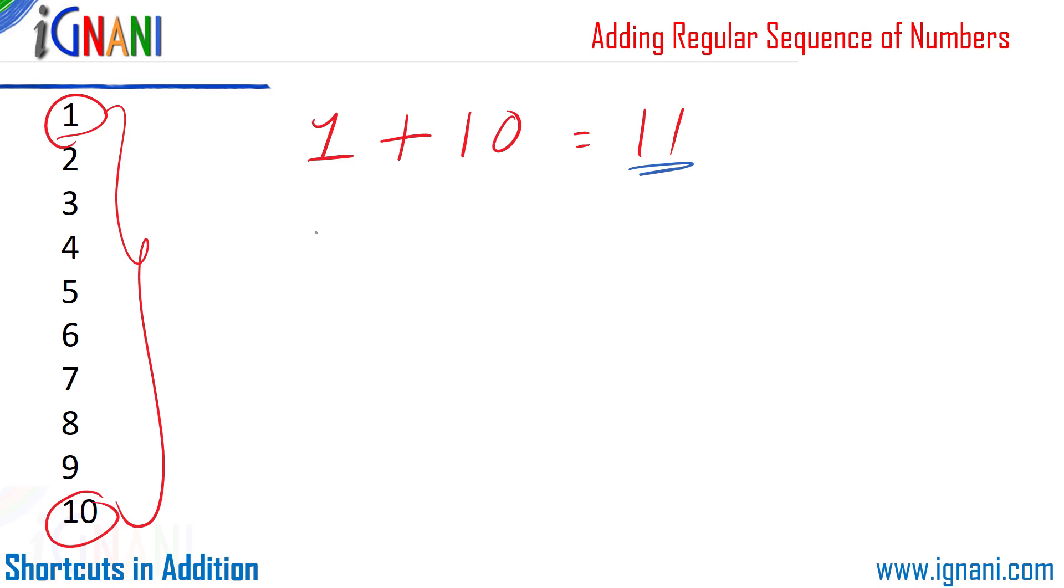Take the result of the previous calculation, which is 11, and then multiply it with the length of the series, that is 10. The result is 110. Now the last thing that you need to do is take the result 110 and divide it by 2.